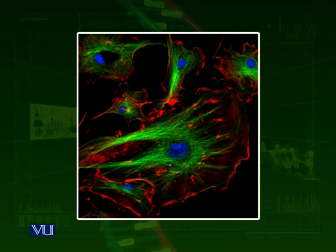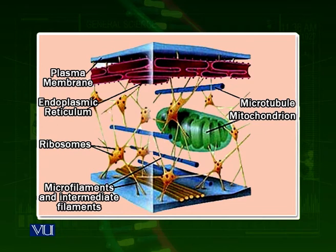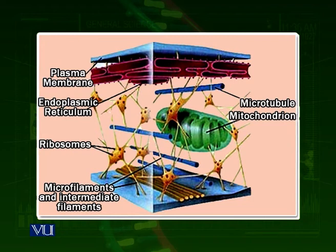Cytoskeletal elements support the organelles, the nucleus, the cell membrane, and others, and also help in movements of organelles when required. In a closer diagram, you can see a mitochondria in green, with the cell membrane above, and different types of filaments attached on one side to the mitochondria and on the other side to the endoplasmic reticulum or the cell membrane. Mitochondria are kept in place with the help of actin filaments, microfilaments, and microtubules.